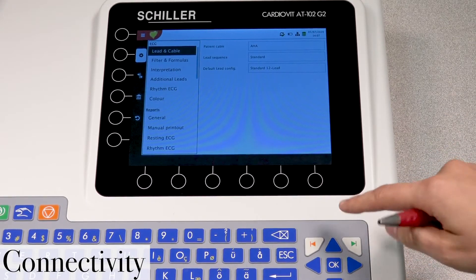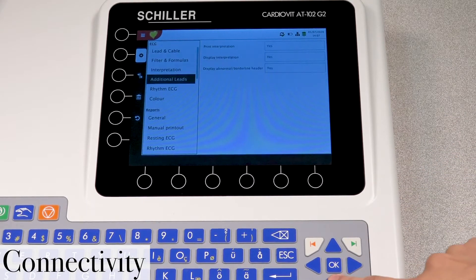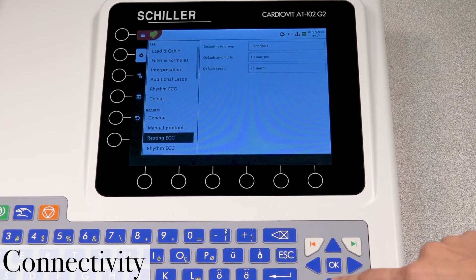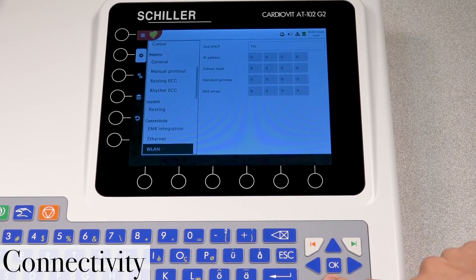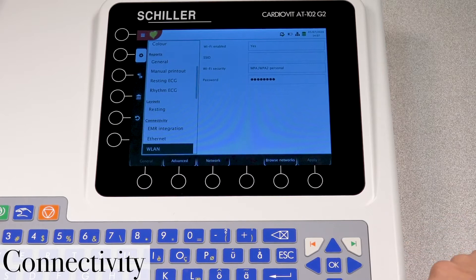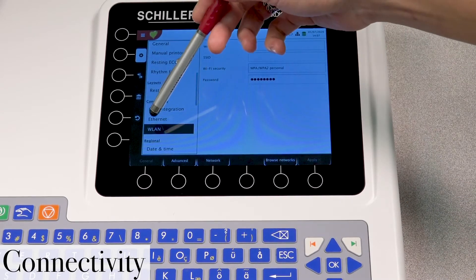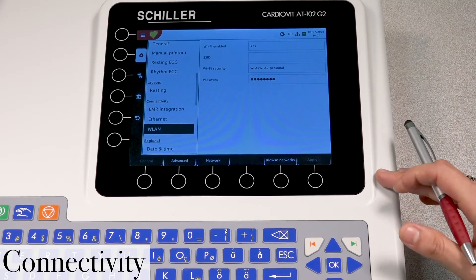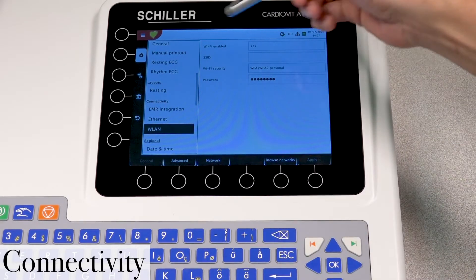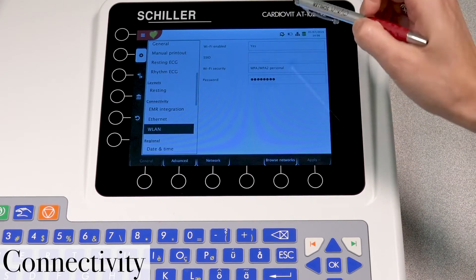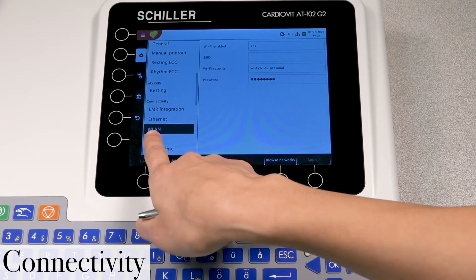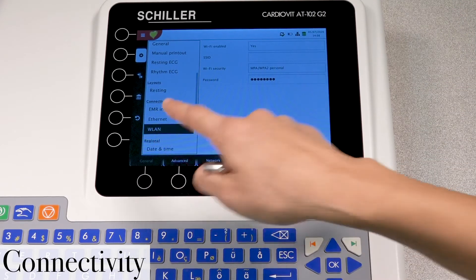And now we're going to use the up and down arrow keys here to navigate down to our designated area in which we are trying to look for the connectivity settings. So let's go into WLAN. Now here's where you'll set your Wi-Fi network. So in order to access this side on the right, what you first must do is have WLAN selected as seen here. Press OK.